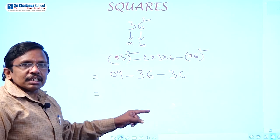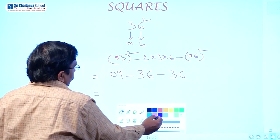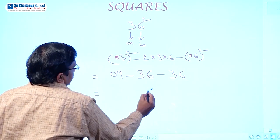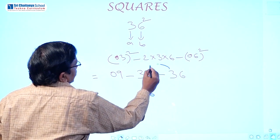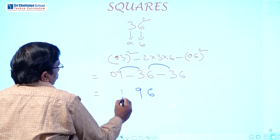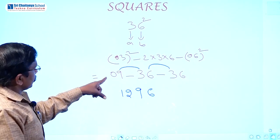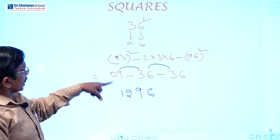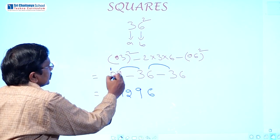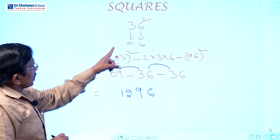Now we go to balancing. How can we balance? Take 6 as it is. Then 3 plus 6 equals 9. Then 3 plus 9 equals 12. If there is a carry, you write the 1 and add it to the next position. So 1 plus 0 equals 1, giving us 1296.